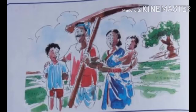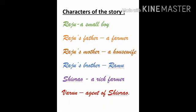In this chapter we will learn about the farming community and how urbanization has affected them. We will go through a story to understand the chapter better. The main characters in the story are Raju, a small boy; Raju's father, a farmer; Raju's mother, a housewife; Raju's brother Ramu; Shivrao, a rich farmer; and Varun, agent of Shivrao.